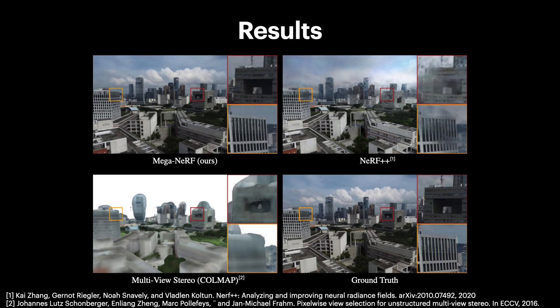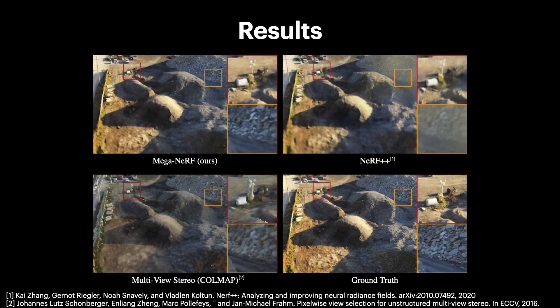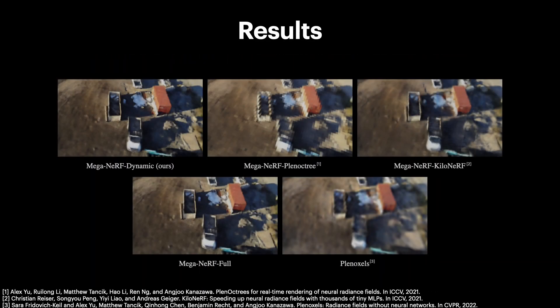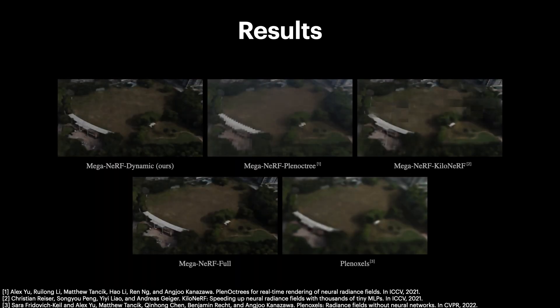We evaluate MegaNerf against multiple varied datasets, including Urban Scenes 3D, the Quad 6K dataset, and our own publicly released Mill-19 dataset that we recorded firsthand near a former industrial complex. We first evaluate the scalability of our training method by comparing MegaNerf's reconstruction quality against multiple baselines, including NeRF++ and multi-view stereo. MegaNerf consistently produces sharper and more realistic renderings, even after allowing the other approaches to train well over 24 hours. Our viewer remains within 0.8 dB in PSNR relative to conventional NeRF rendering, while accelerating the process by over 40x.